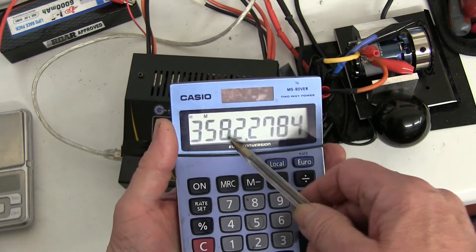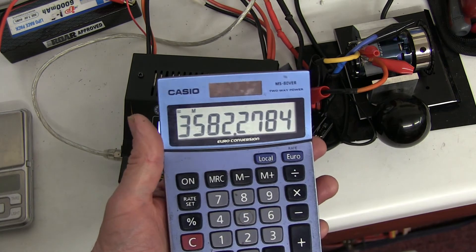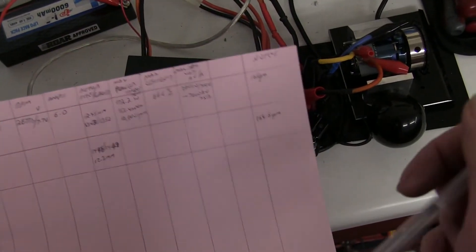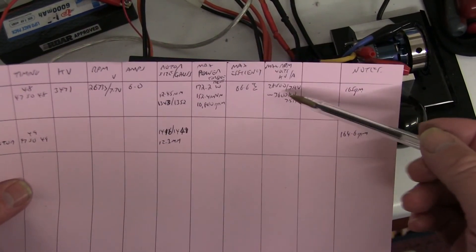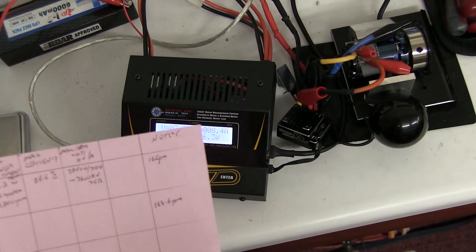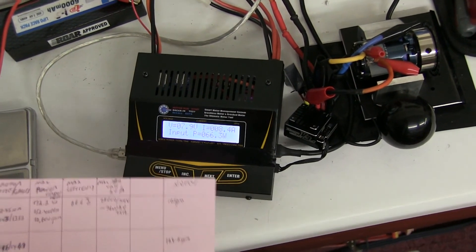The amps look about the same. And I'll just check the KV. It did 28,300. And the voltage was 7.9. 28,300 divided by 7.9 gives you 3582 KV. And the other one was about 3600. So it looks like there's no advantage in it so far on this dyno reading.